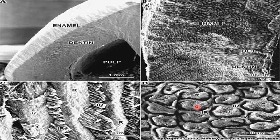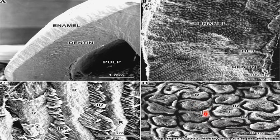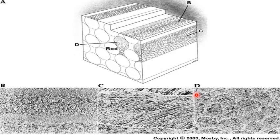The enamel rod takes different shapes depending on the section. It may appear as a fish scale appearance — this is the enamel rod and the area between two enamel rods represents the interrod substance. This diagram represents the keyhole appearance of the enamel rod in cross section — the body is the enamel rod and the tail represents the interrod substance. These show the crystals present inside the enamel rod and the crystals inside the interrod substance.